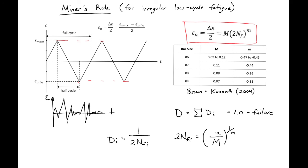This is an expression that we can use to find at what point our bar is going to fail with an irregular strain history.